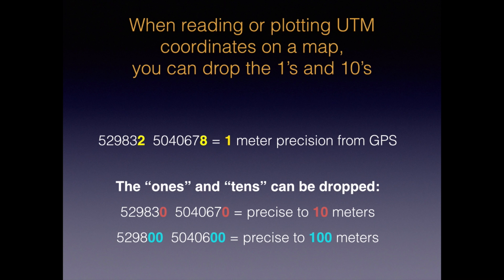While a GPS will give you a coordinate precise to one meter, often you don't need to be this exact. For example, if you want to plot the coordinates from your GPS onto your map, your map is not going to be zoomed in enough to allow you to plot this accurately. So when using UTM coordinates on a map, we often change the digits in the ones and tens place to zero. Doing this gives a position to 100 meters, which most of the time is going to be close enough. Notice that we're changing the last two digits to zero and not rounding off.